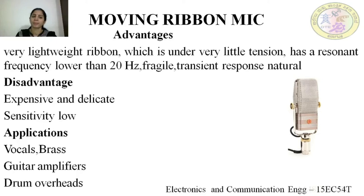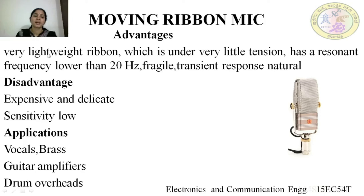Advantages of moving ribbon microphone: it is very lightweight compared to moving coil microphone, since the simple design — a very lightweight ribbon residing inside the permanent magnet under very little tension. Moving ribbon microphone has a resonant frequency lower than 20 Hz, hence it is sensitive to more low frequency signals compared to high frequency signals. The transient response is natural compared to moving coil microphone. Disadvantages: since the ribbon is delicate, the moving ribbon microphone is very expensive and delicate. The output level or sensitivity is low.